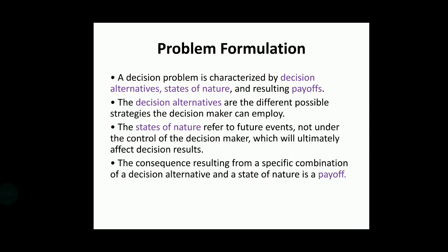When you come to the problem formulation part of decision theory, a decision problem has three different components. The first is decision alternatives — the different possible strategies that the decision maker can employ, such as whether to invest in bonds or in mutual funds.